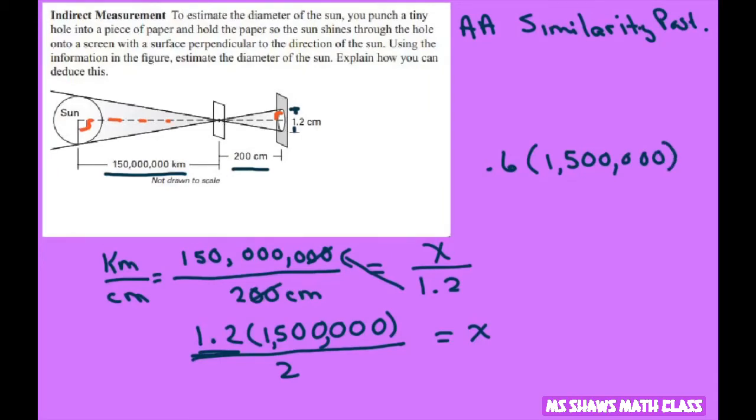And that's going to give you 900,000 kilometers. So that's what your diameter of the Sun would be. And that means this whole piece here, the diameter.